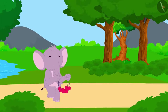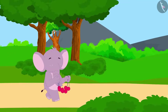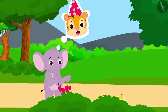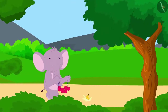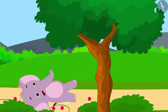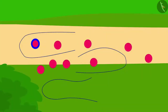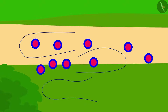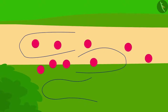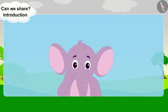Who is this? Appu the elephant. He is bringing 3 necklaces for Shere Khan as a birthday gift. Oh no, Appu slips down and all the necklaces are broken. Appu had a total of nine pearls in his three necklaces. Can you help Appu make three necklaces with equal pearls again?